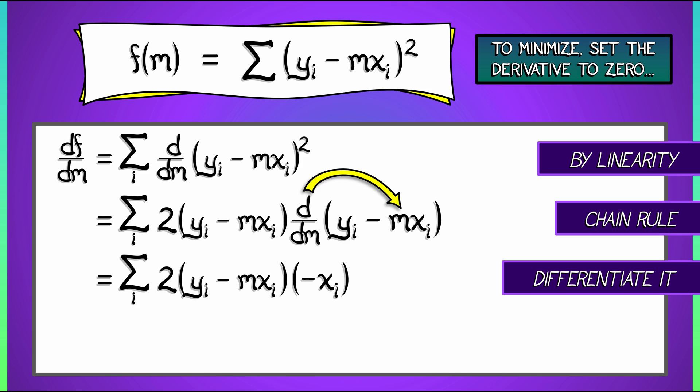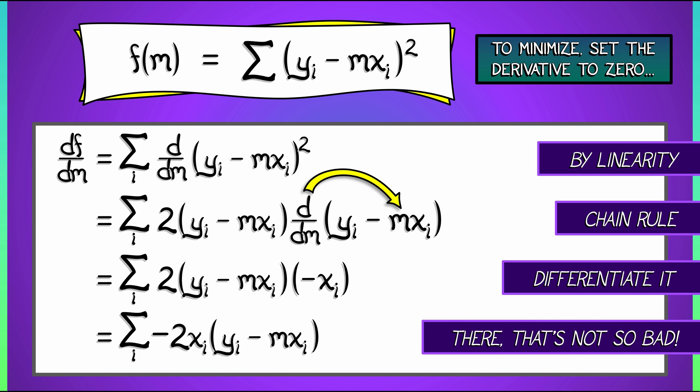And if we multiply that through, simplify it a little bit, we get the sum over i of minus 2xi times quantity yi minus mxi, and that's not so bad.